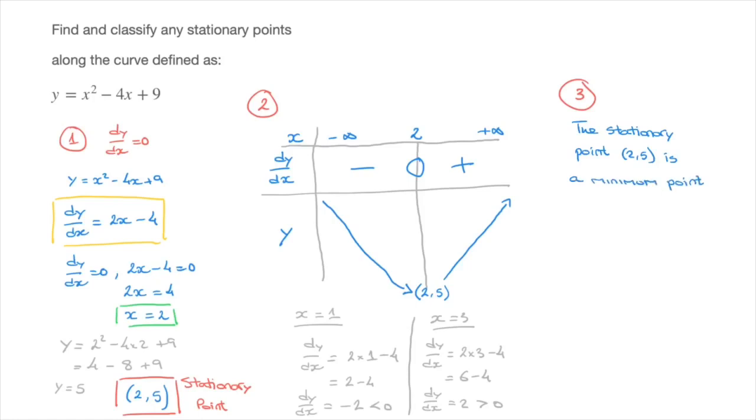And in fact, if we wanted to, we could be more specific and state that it's a global minimum, meaning there will be no other point on this curve lower than (2, 5).